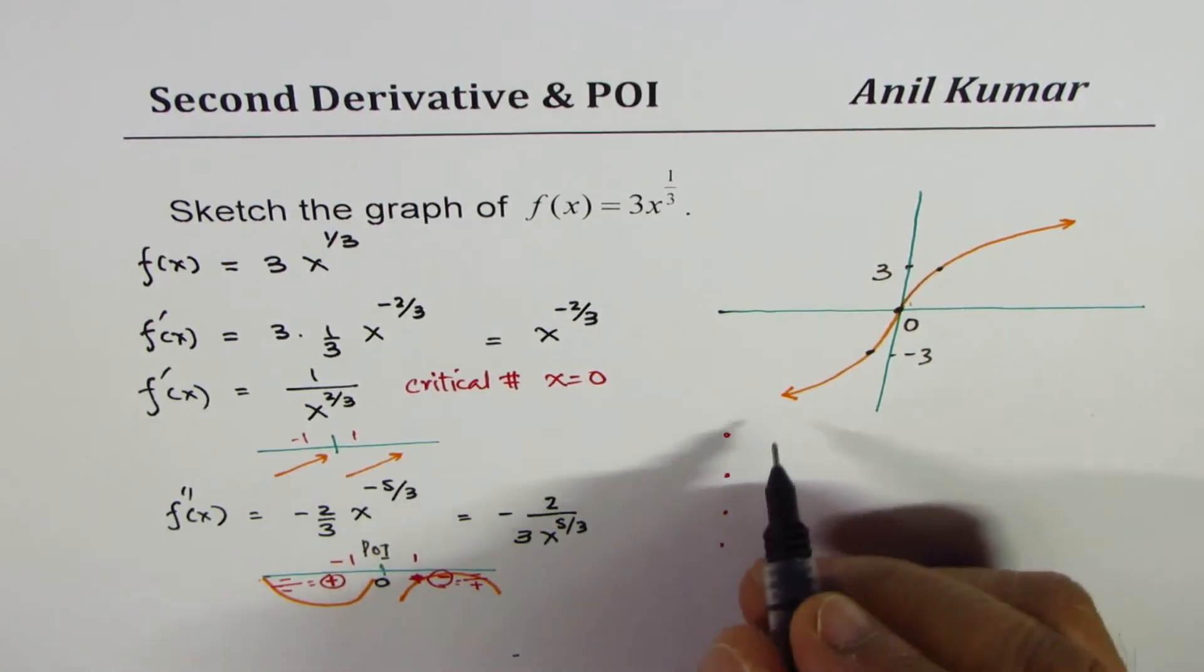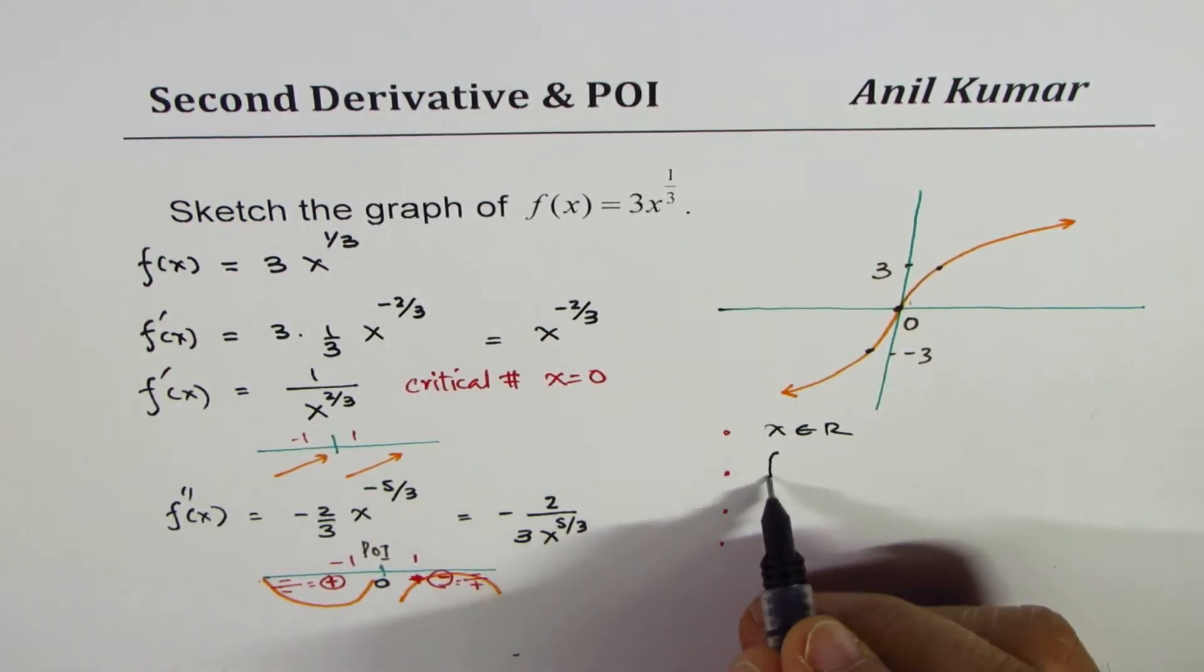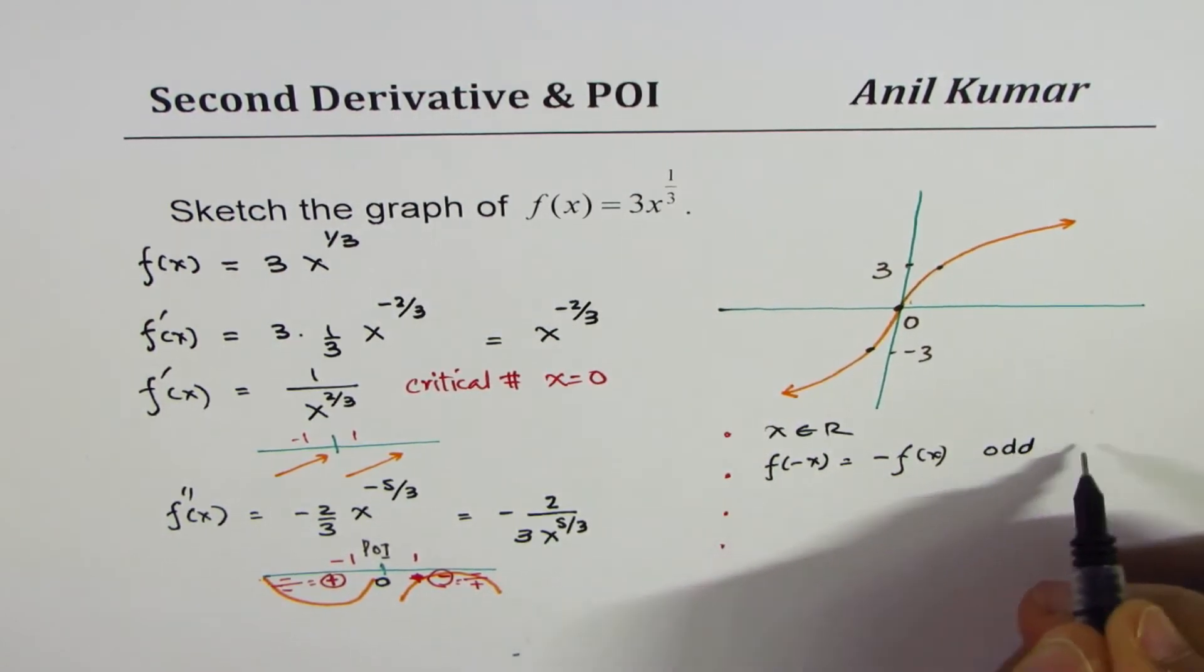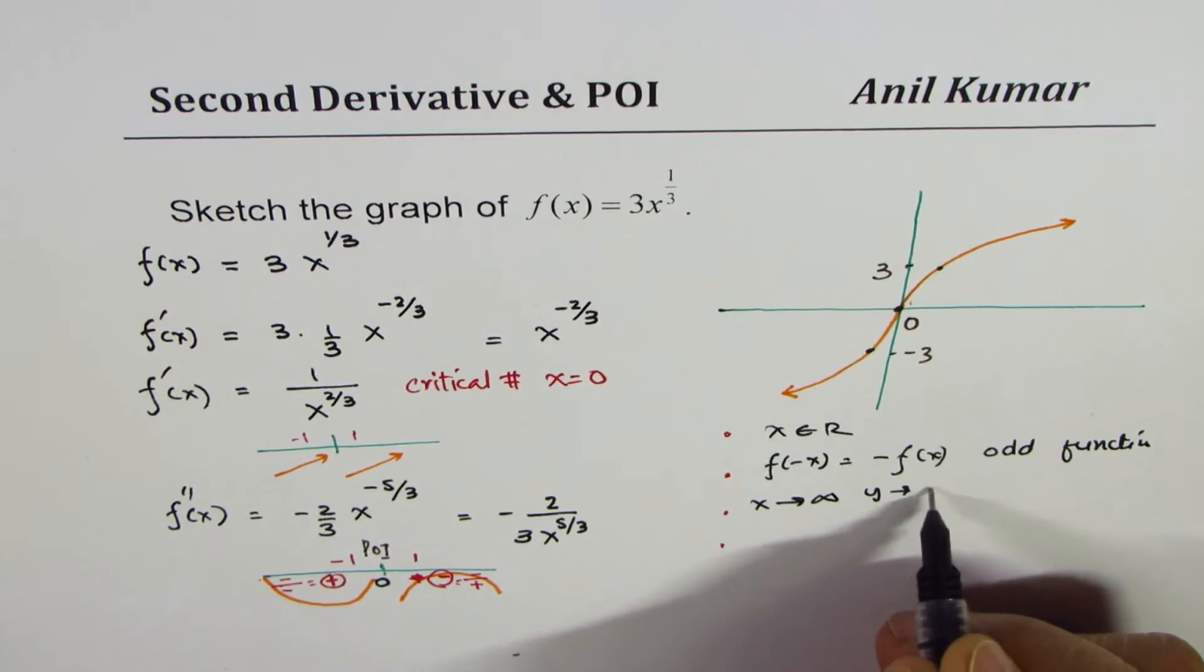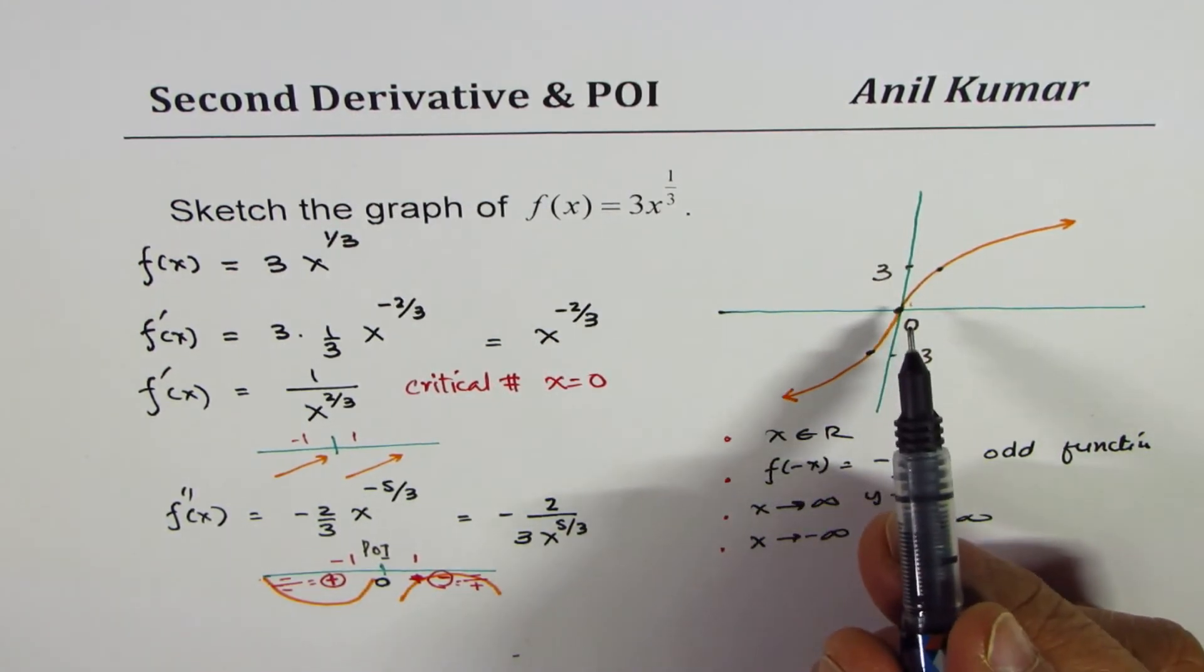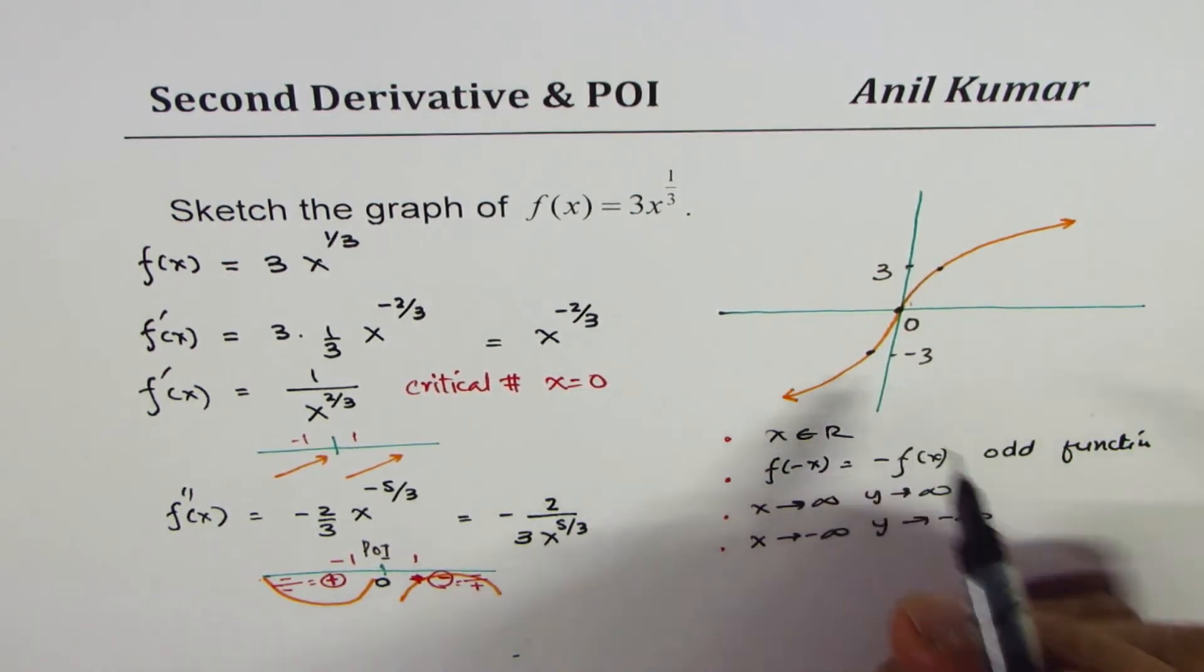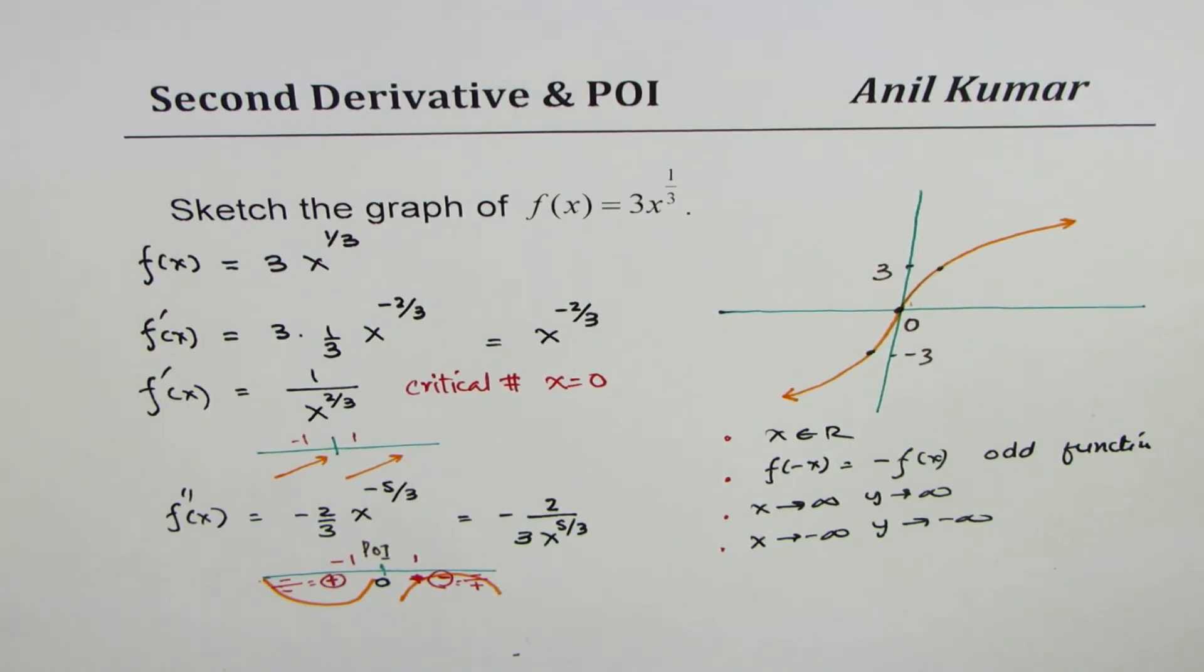Let me write down those points. First is that x belongs to real numbers. There are no restrictions on this function. And then we know f of minus x is equals to minus of f of x. That means it is odd function. And end behavior as x approaches positive infinity, y approaches positive infinity. As x approaches negative infinity, y approaches negative infinity. And few points, as I was saying, you could find the points at plus minus 1, which we did, which will help you to give a better graph. In addition to what we have learned here, these points will help you to sketch a better graph for the given function.